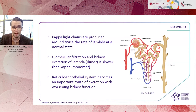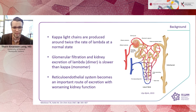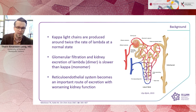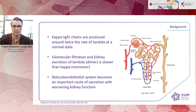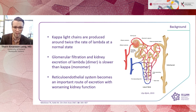The kappa light chains and the lambda light chains differ a little bit in how they are excreted at a normal rate. When kidney function decreases, another system — the reticuloendothelial system — takes over in the excretion, and as a result the ratio between the kappa and the lambda changes.